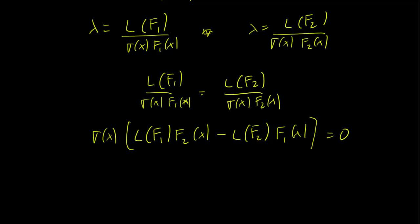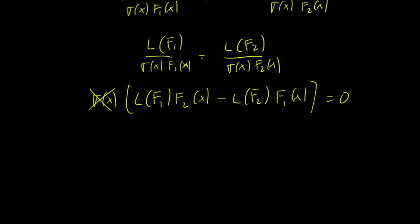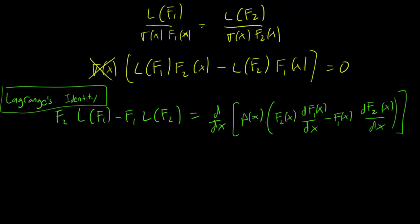However, sigma x is always positive, that's one of the conditions of the regular Sturm-Liouville problem, so we can just ignore it. And we're left with this equation instead. But if you may recall Lagrange's identity, we've just shown that the left-hand side is 0. This goes away.